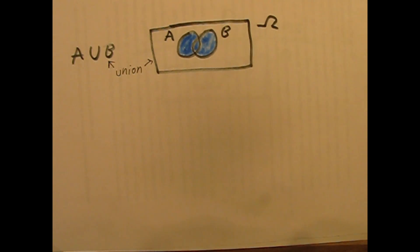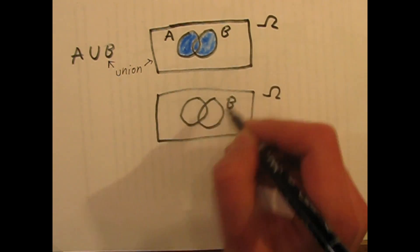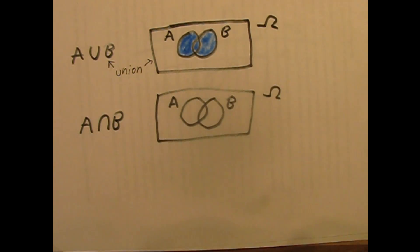Their common components are called intersection of these sets, and you can also do, for example, A-B, which is all of A's components minus the intersection of A and B.